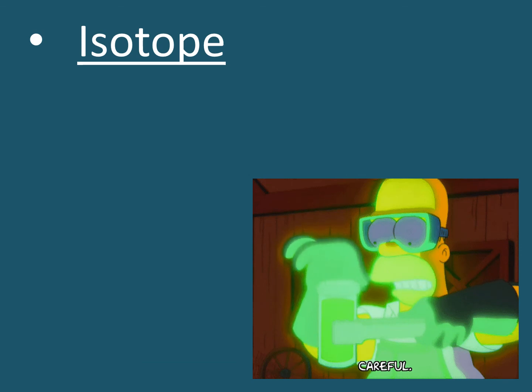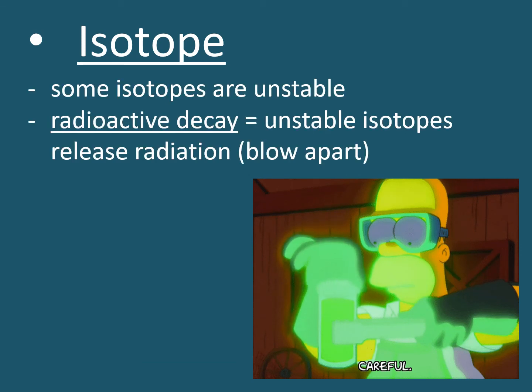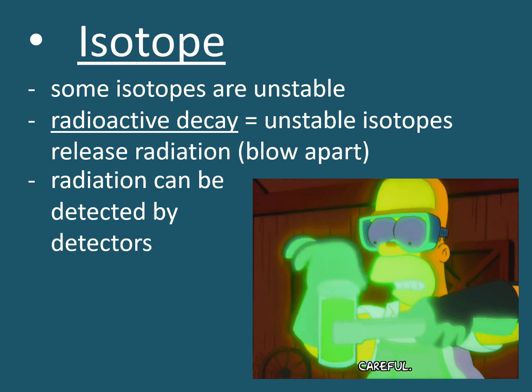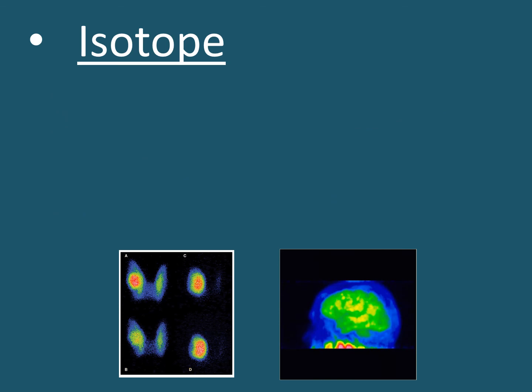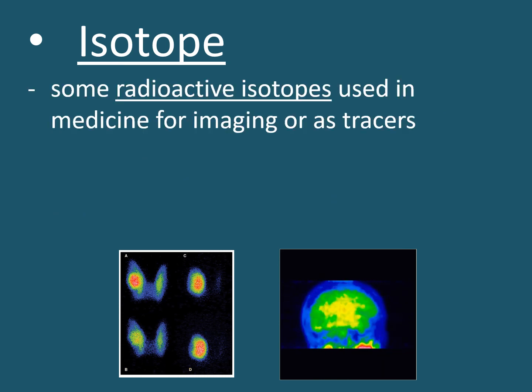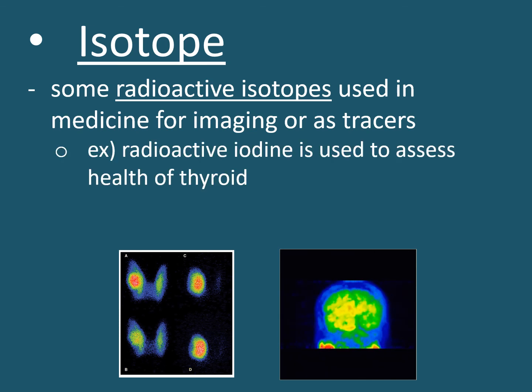Some isotopes are unstable. Unstable isotopes release radiation. This is known as radioactive decay. When an isotope decays, you can think of it as blowing up or coming apart. As an isotope decays, the radiation that's released can be picked up by detectors. Some radioactive isotopes are frequently used in medicine. They can be used for imaging or as tracers. For example, radioactive iodine is used to assess the health of a thyroid.